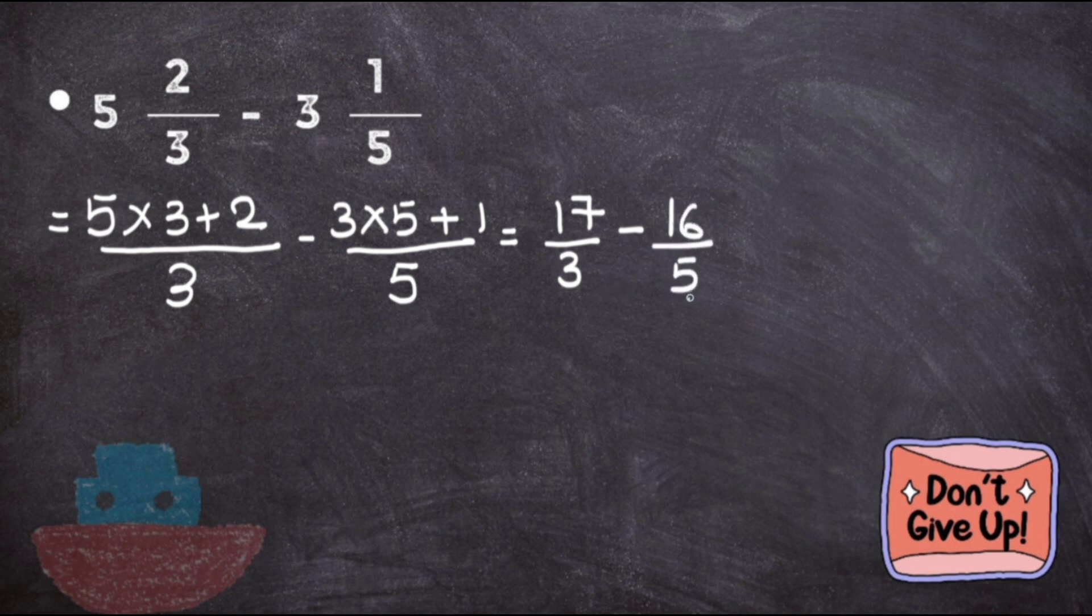Now you have two fractions to subtract. First check the denominators - are they the same? No. Are they related? No, 3 and 5 are not. So what you have to do is simply cross multiply to find a new fraction.